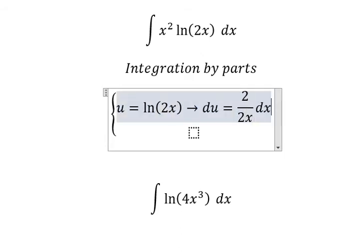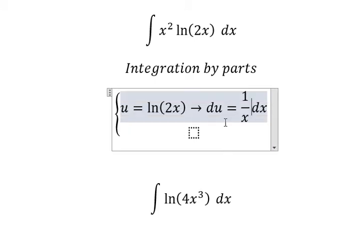If we do the first derivative of this one, we keep 2x on the denominator. Later we do the first derivative of 2x, you got 2. Number 2 divided by number 2, we have 1 over x.